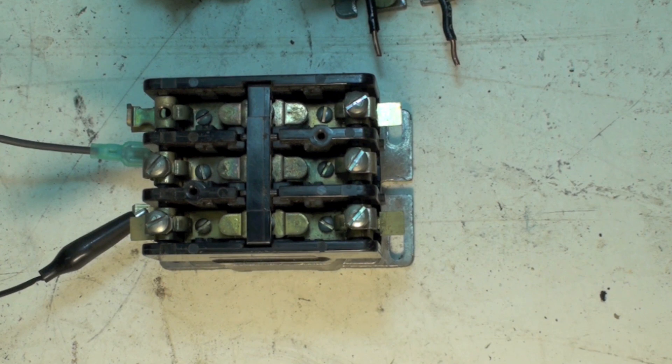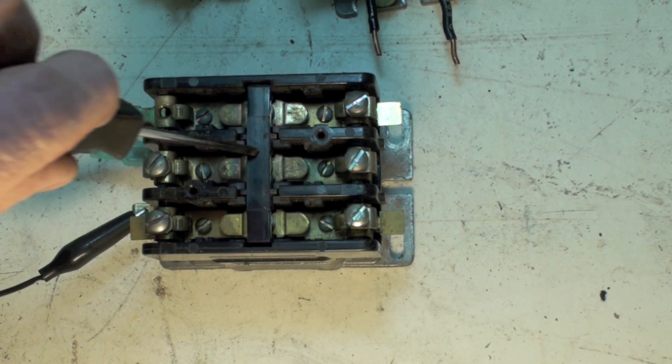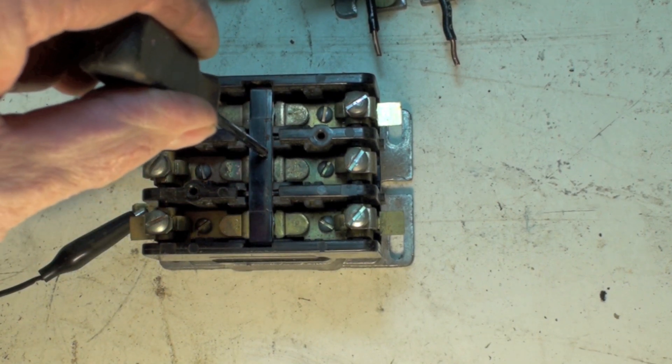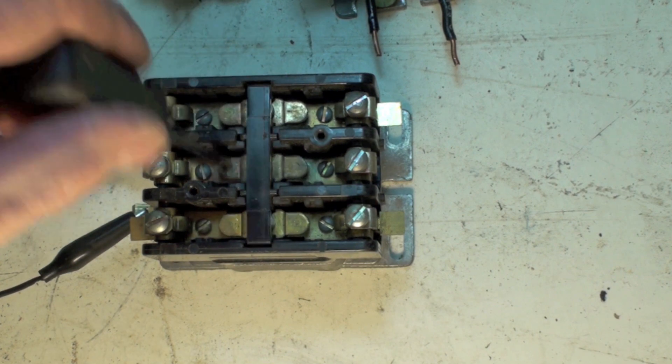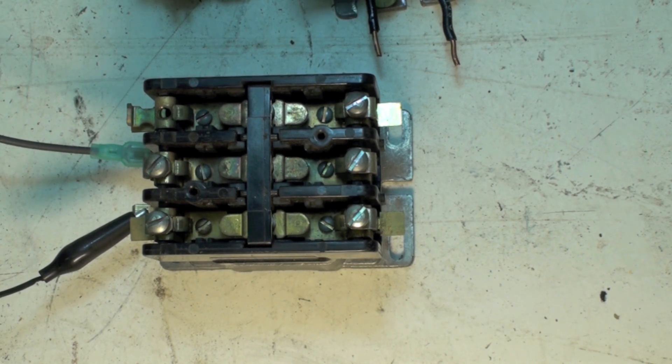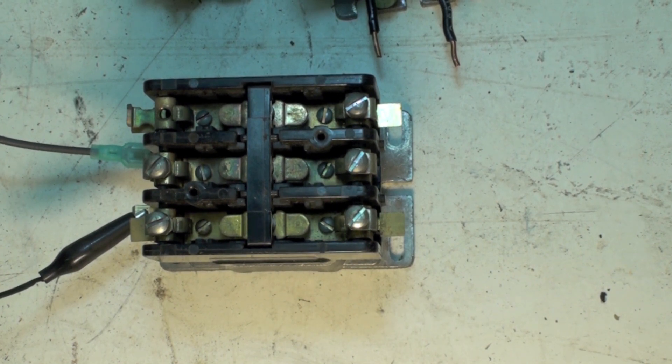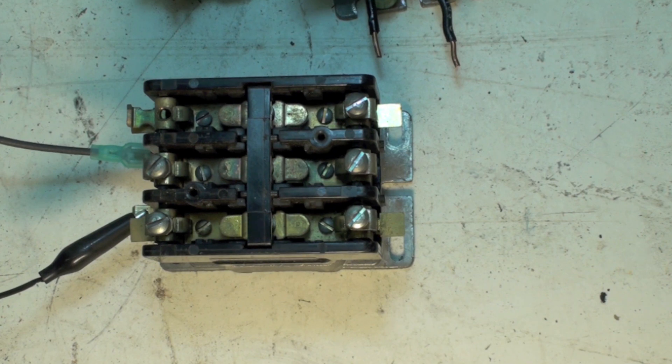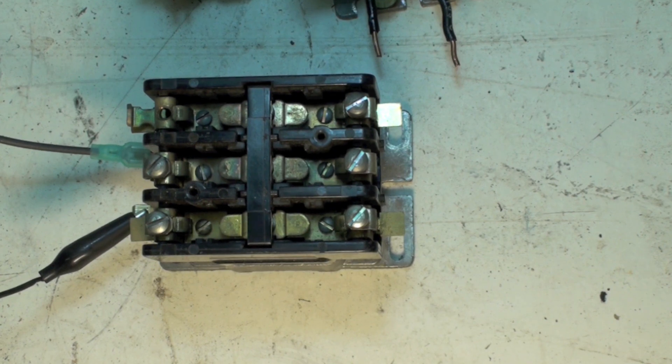Because every time this armature goes down, it's gonna make contact and it's gonna break, and it's gonna make and break and make and break. And usually takes out the contacts in just a short time. So the contactor almost always has to be replaced in that case, but it's usually not a contactor problem that caused it.